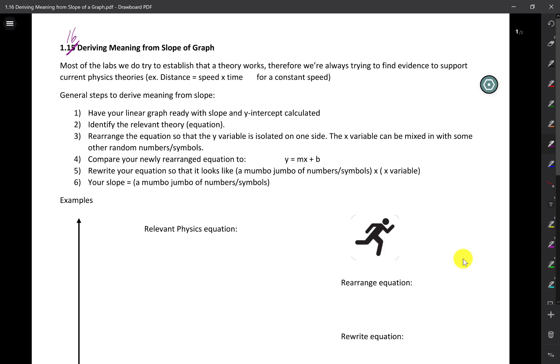At this point, you should be done with your linearized graph. You should have your maximum slope and your slope uncertainties fully calculated, which means you know what your slope is with a value and its units.